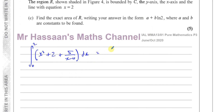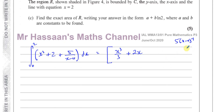I'm going to take the function in the form x squared plus 2 plus 5 over x minus 4 and integrate this with respect to x between the limits 0 and 2. Integrating x squared gives you x cubed over 3. Integrating a constant gives you the same number with x — that's 2x. And integrating 5 over x minus 4: we can't use the power rule because dividing by 0 is undefined.